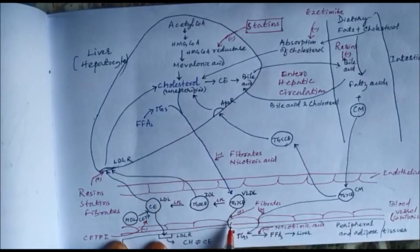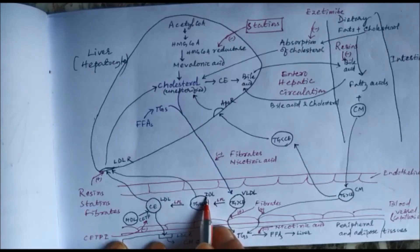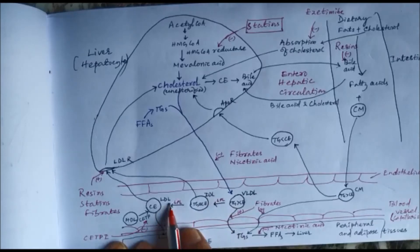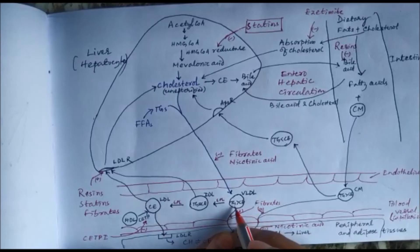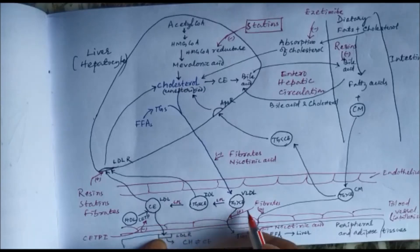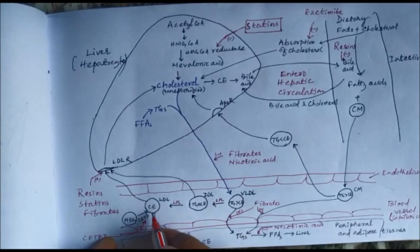By the action of lipoprotein lipase in the endothelial blood vessels, VLDL is converted to intermediate density lipoprotein (IDL), and then again by the action of lipoprotein lipase they are converted to LDL — low density lipoprotein. In VLDL, triglycerides are more than cholesterol esters. By action of lipoprotein lipase, triglycerides are released into peripheral tissues and adipose tissues. In IDL, triglycerides equal cholesterol esters, and in LDL mostly cholesterol esters are present.